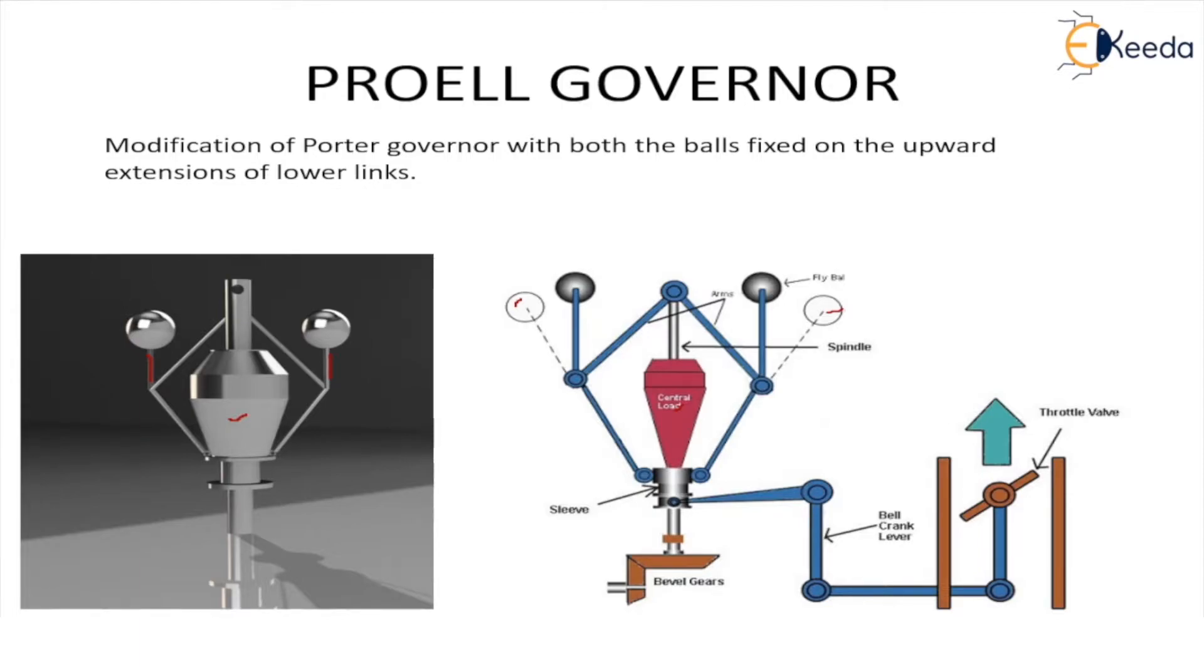Vice versa, when load increases, speed decreases. The arms along with the central load lower down. The central load lowers down along with the sleeve and the fly balls move inward. This condition and throttle valve opens to increase the supply of the working fluid in order to maintain the mean speed.